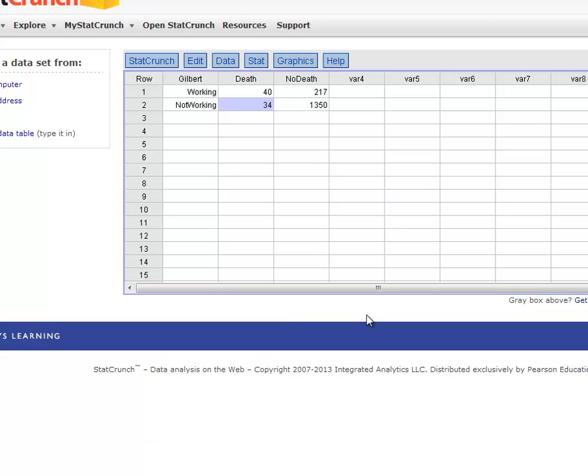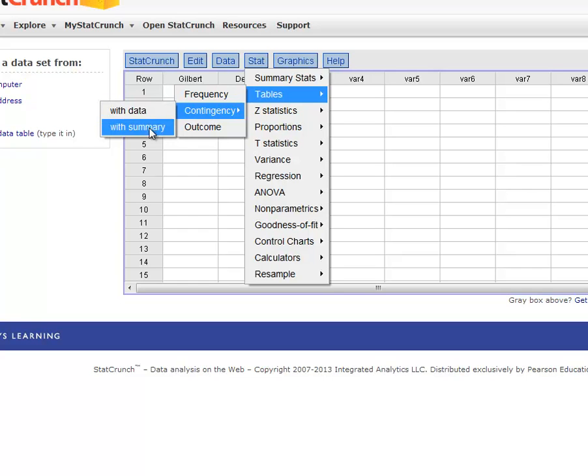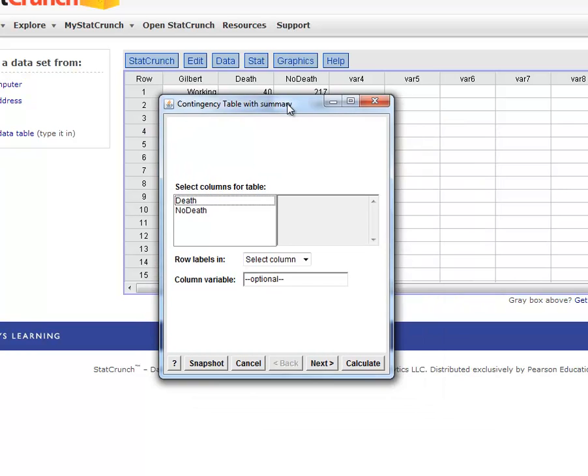And here it is. And so it's very easy to do this in StatCrunch. I'm just basically copying that same table. We have for rows whether or not Gilbert worked. And then the columns are for the death variable. Death or no death on the shift. And so to do a chi-square test of independence, I go to Stat and then Tables because this is a contingency table. And these instructions are in your course packet. And when I type in that table, it's just summary. It's not the actual raw data. So Tables, Contingency Tables with Summary.